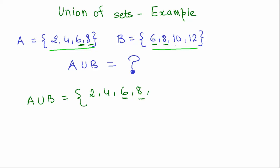There are two additional elements, 10 and 12, so we'll just write them. We have 10 and 12. This is your new set which is formed by the union of set A and set B. This is how we represent union of sets.